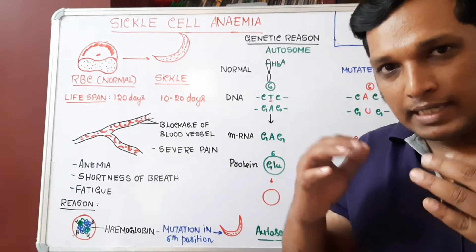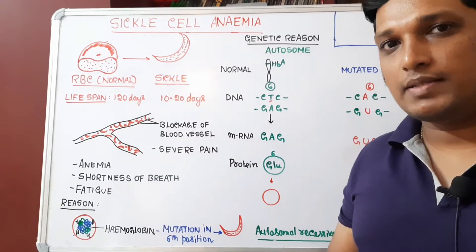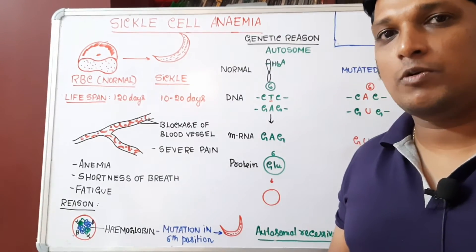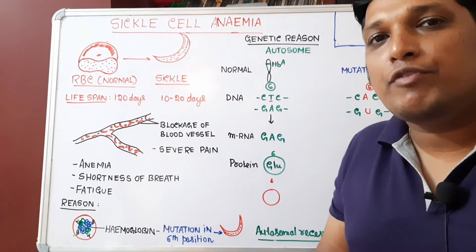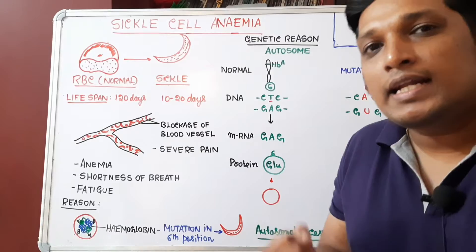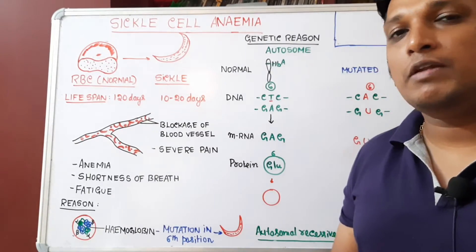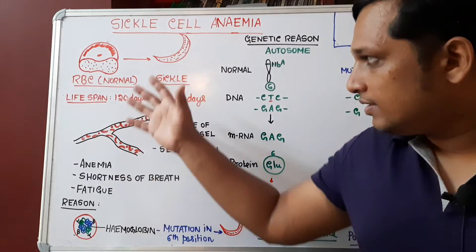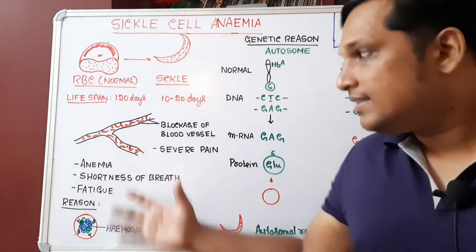With fewer RBCs and reduced oxygen-carrying capacity, all tissues won't receive a sufficient amount of oxygen. When oxygen is insufficient, there won't be further breakdown of glucose to produce ATP, so energy won't be available in the body. This tiredness is called fatigue. These are the common symptoms of sickle cell anemia.